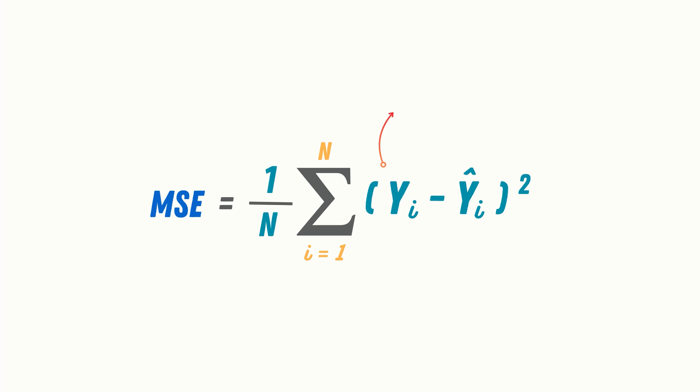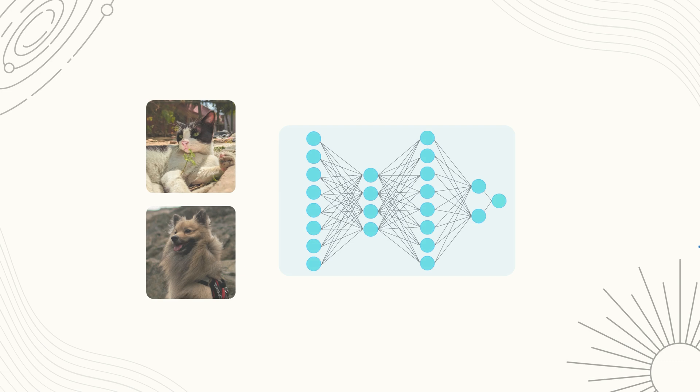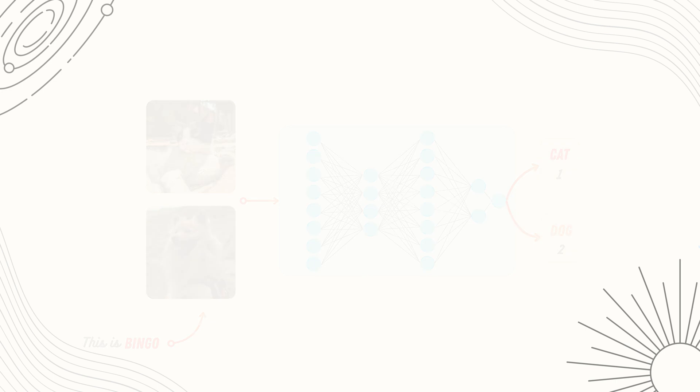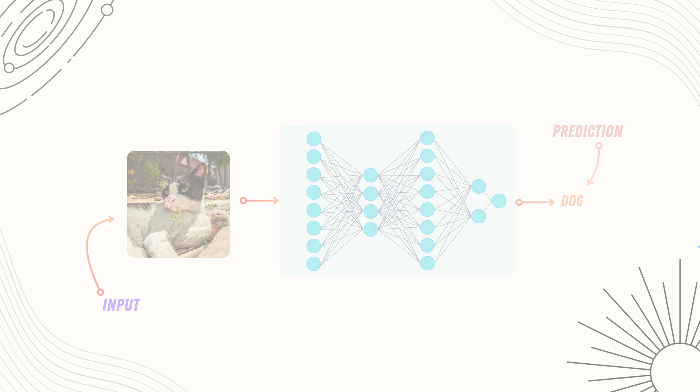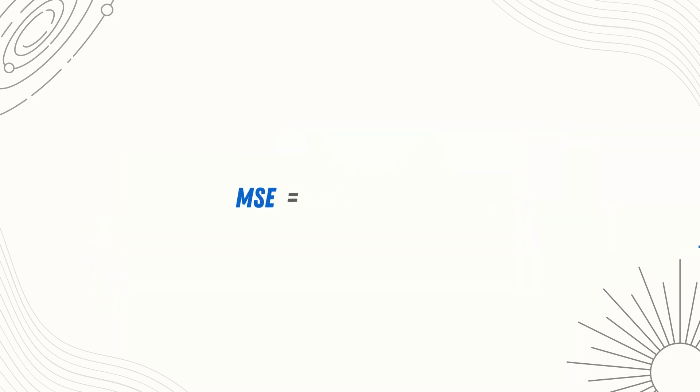In the equation, yi is the true label, and yi hat is the predicted label. Let's say we have a neural network which detects cat and dog images. Now, we gave a cat image as input. But our model predicted that it is a dog.